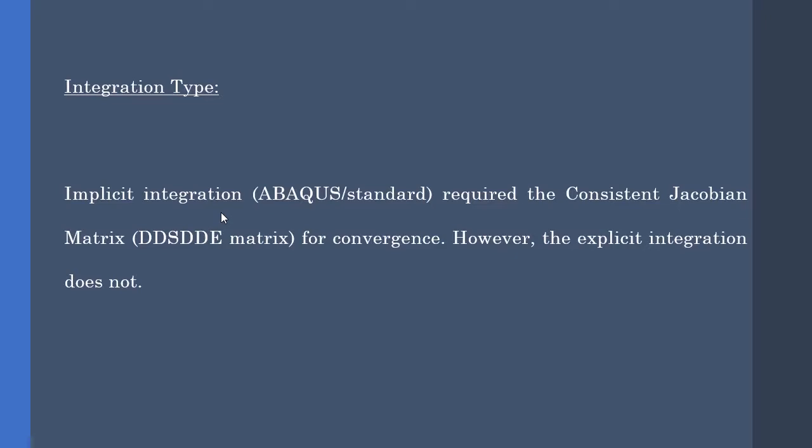That is why the implicit algorithm requires the DDSDDE matrix while the explicit algorithm does not. Now let's focus on writing the correct form of the DDSDDE matrix for elastoplasticity, or simply put, metal plasticity.